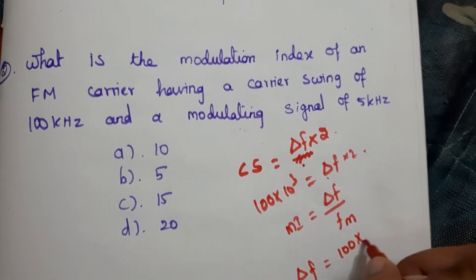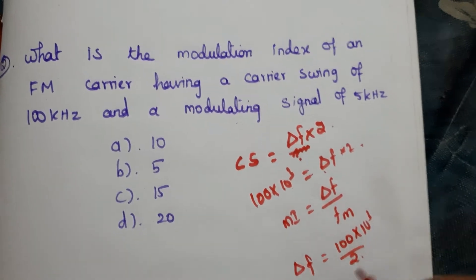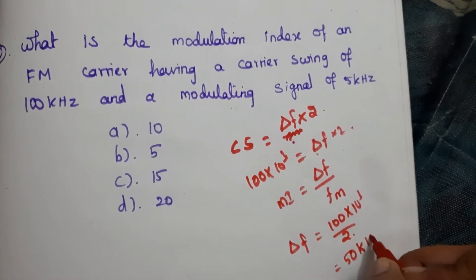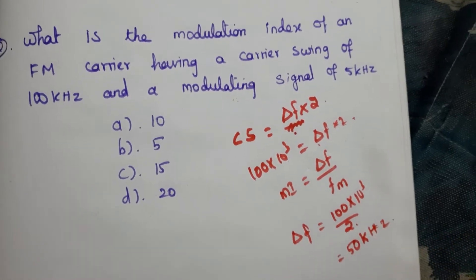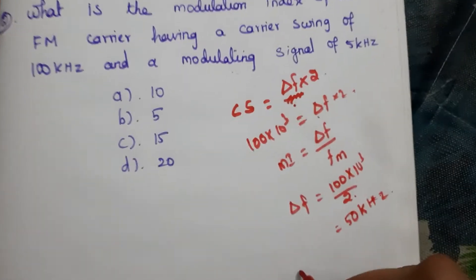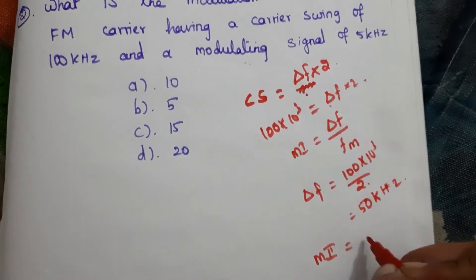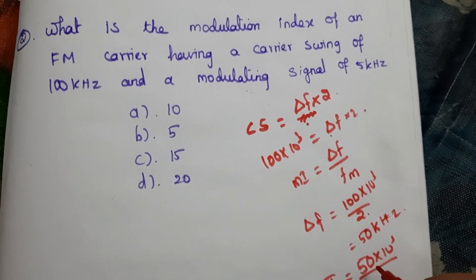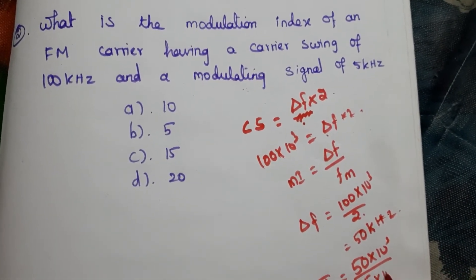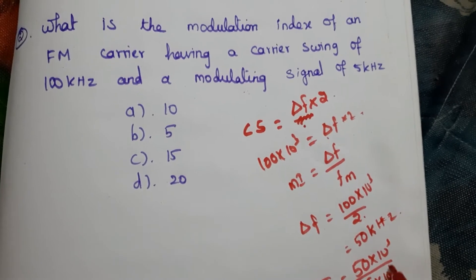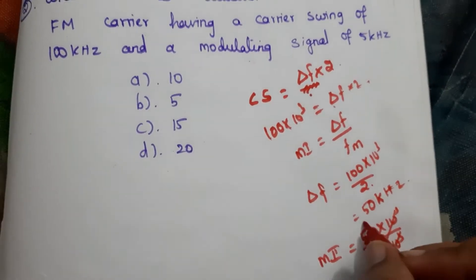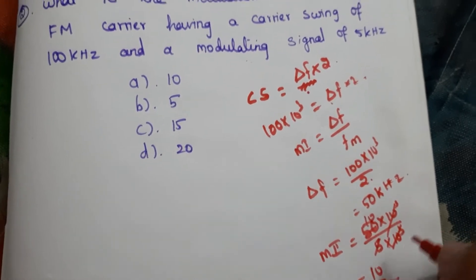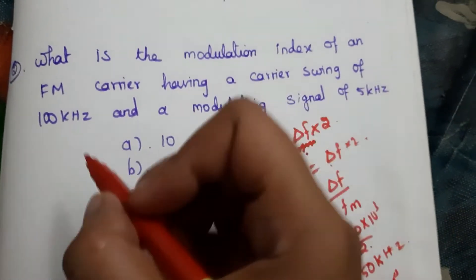Using the formula: Δf = 100kHz / 2 = 50kHz. Then modulation index = 50kHz / 5kHz = 10. So the modulation index is 10 and the answer is A.